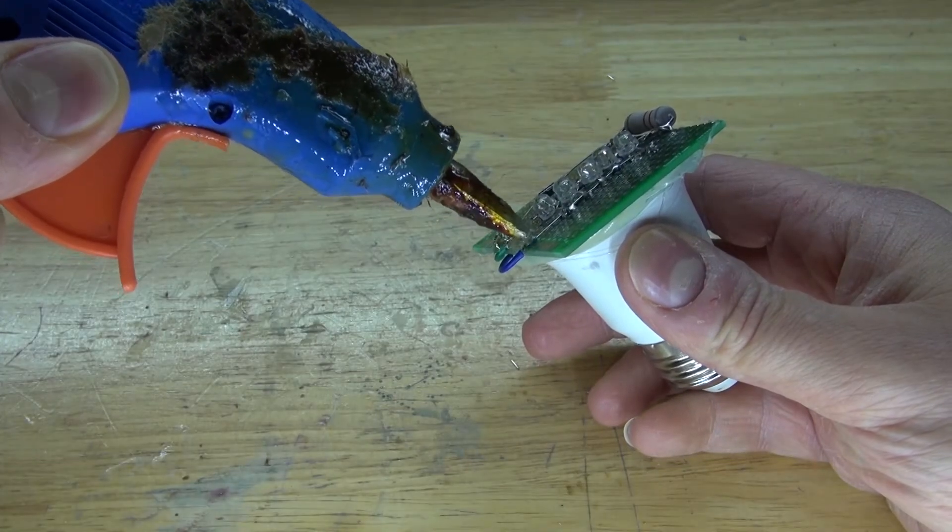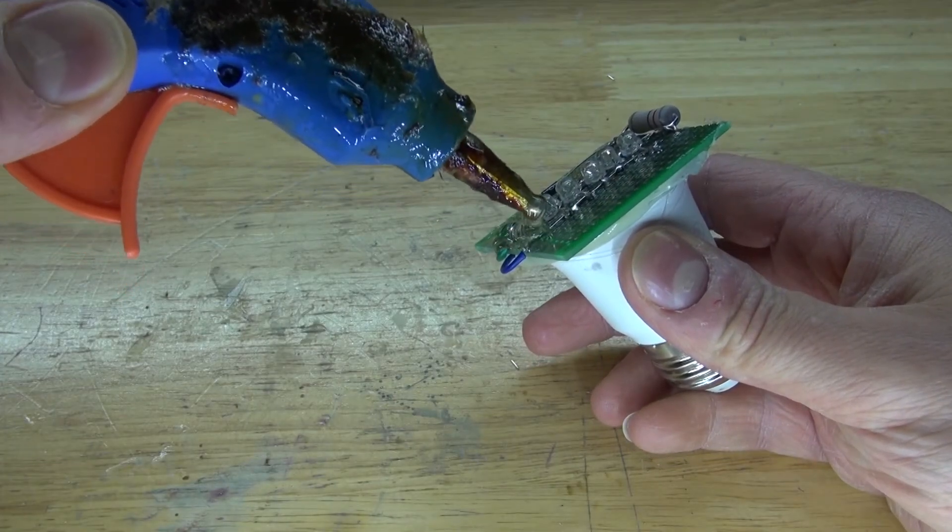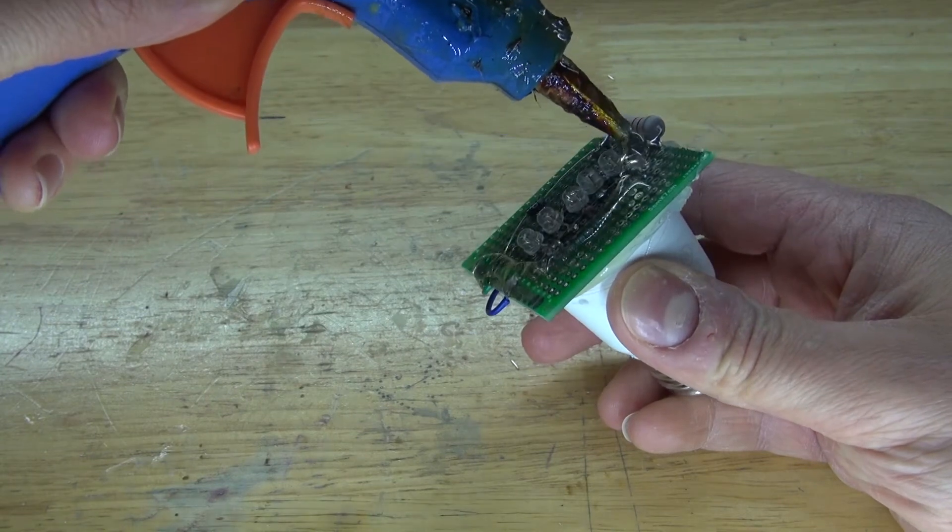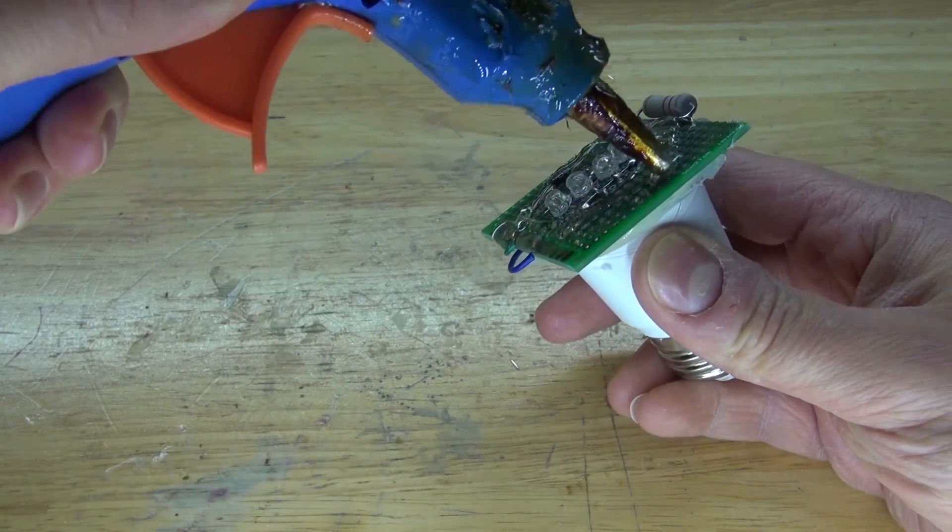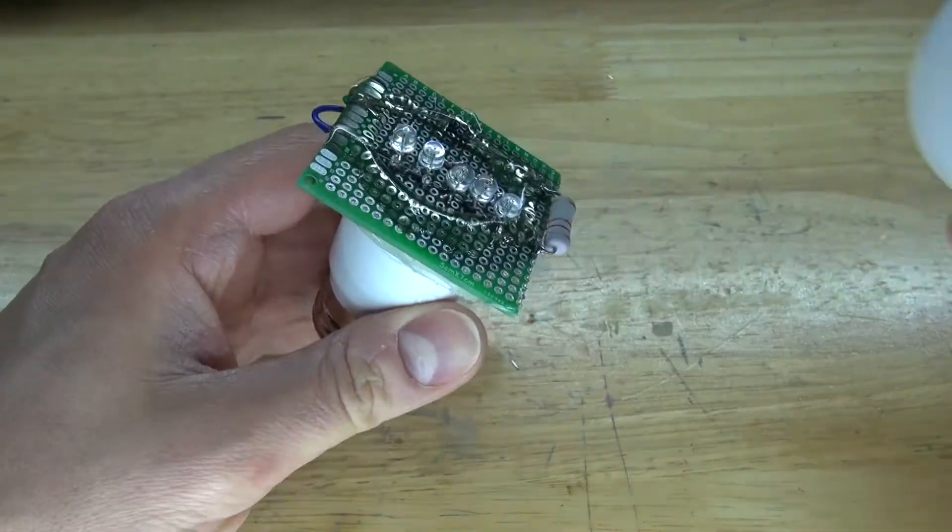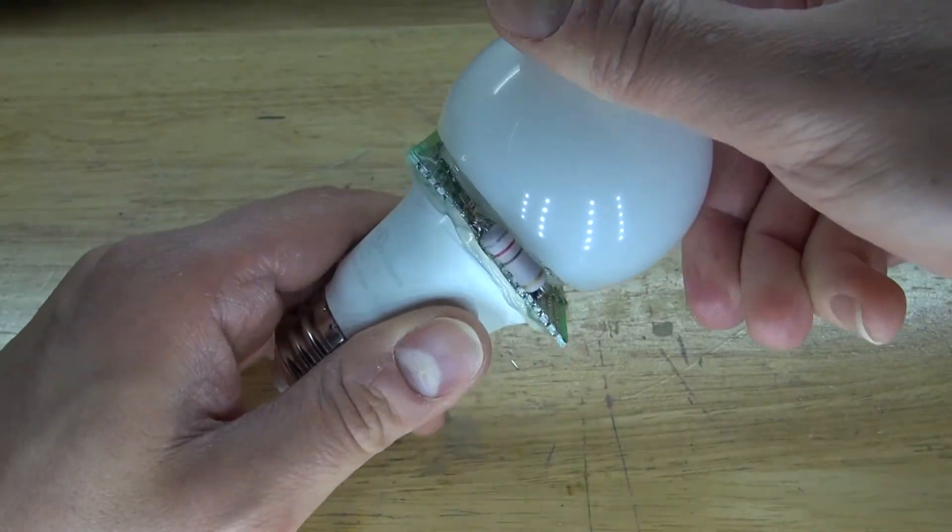Next, I'm going to take some hot glue and put it on the exposed leads. Doing this will insulate the circuit and make the circuit a lot safer. And now put some more hot glue all the way around the circuit. And now I can glue the globe in place. And there, the project is now complete.